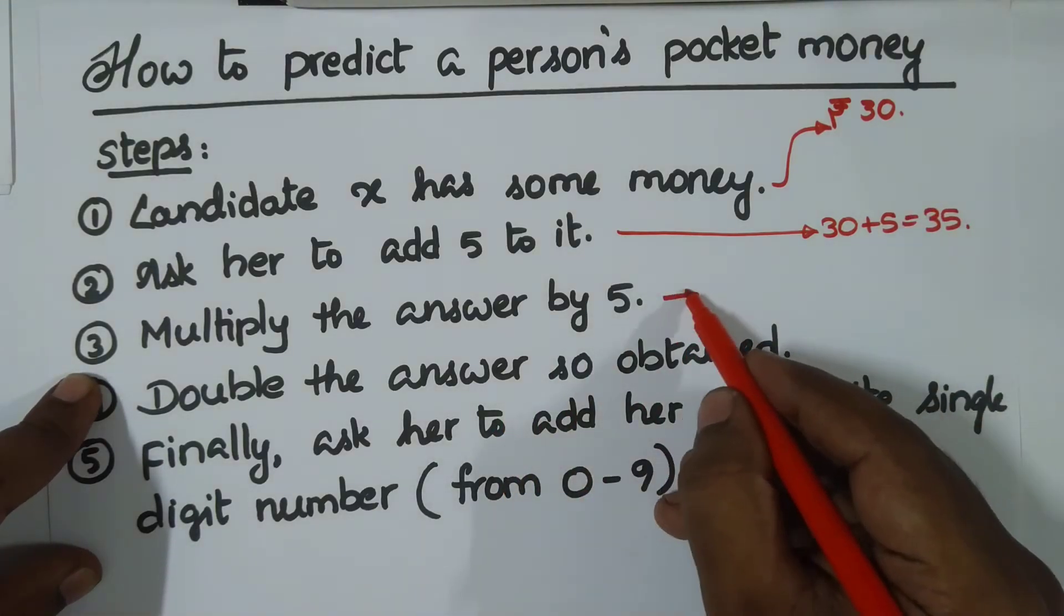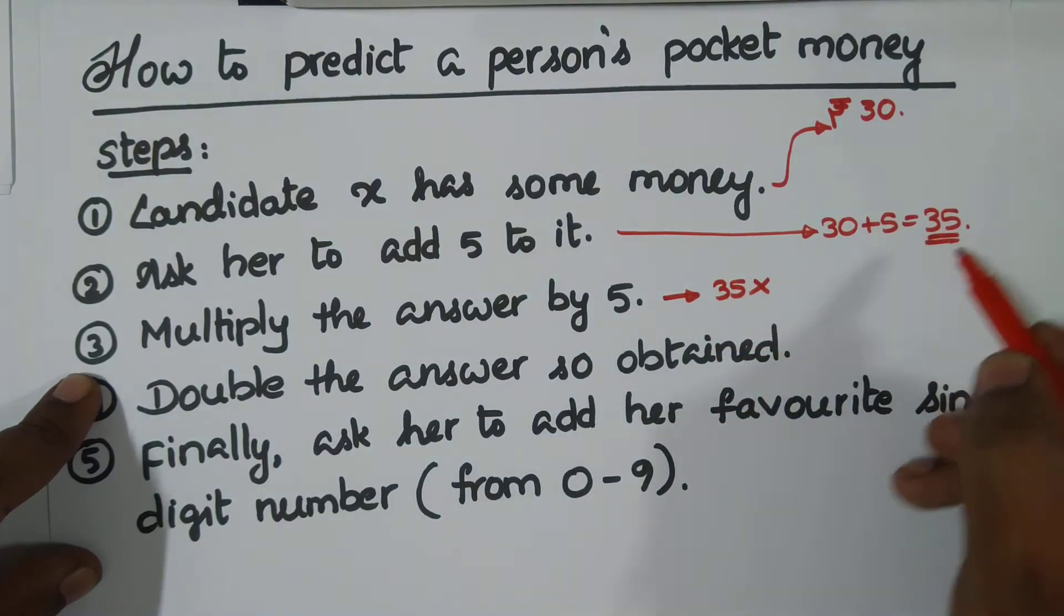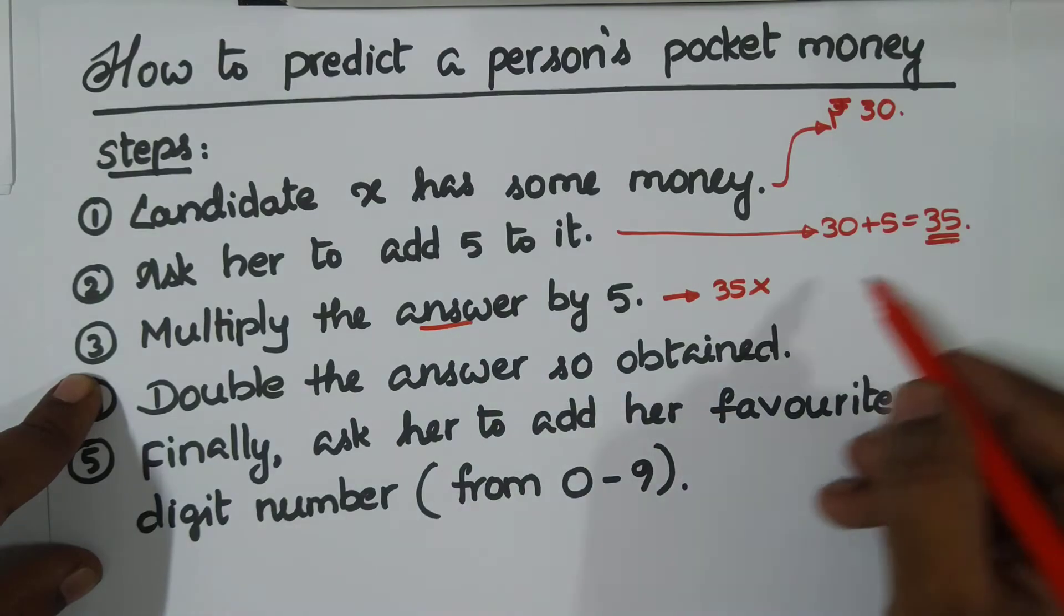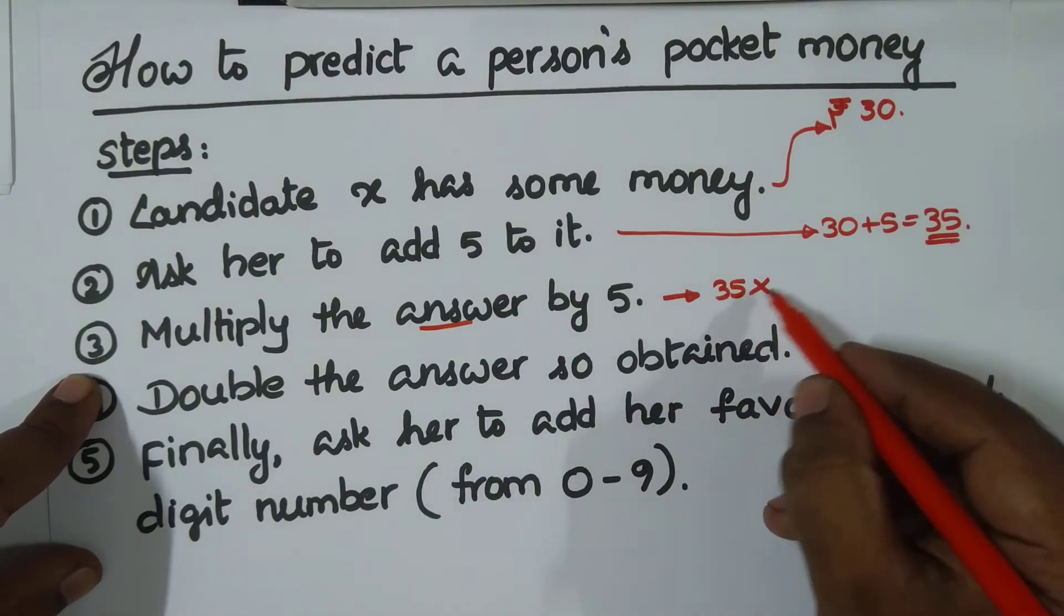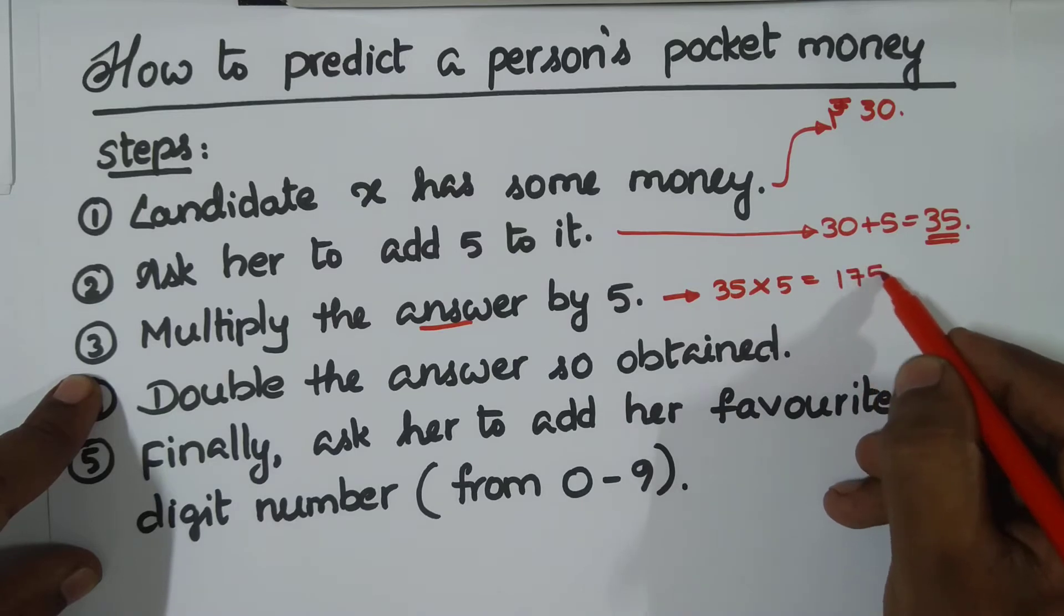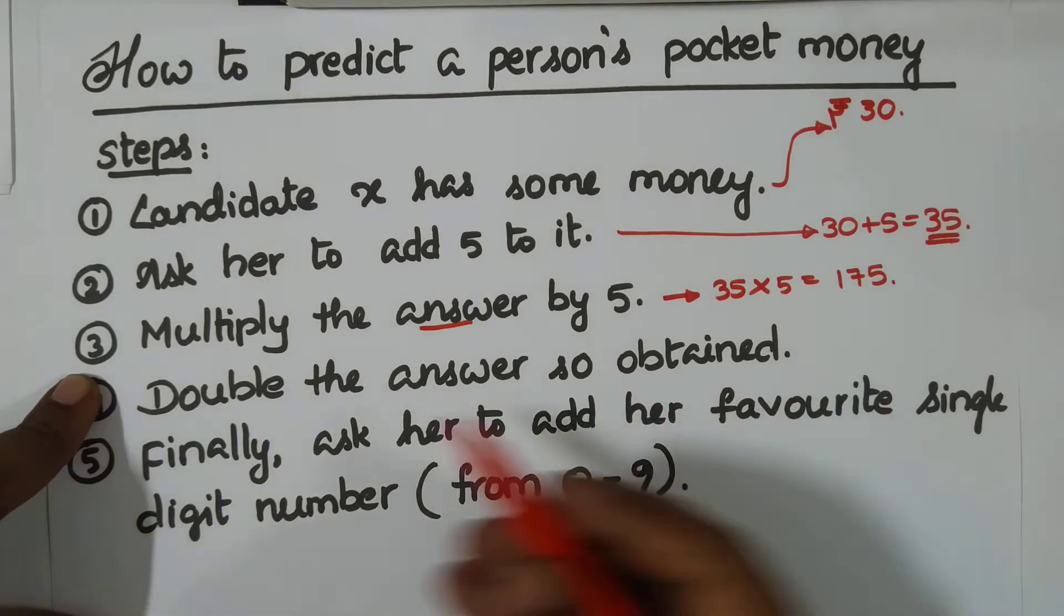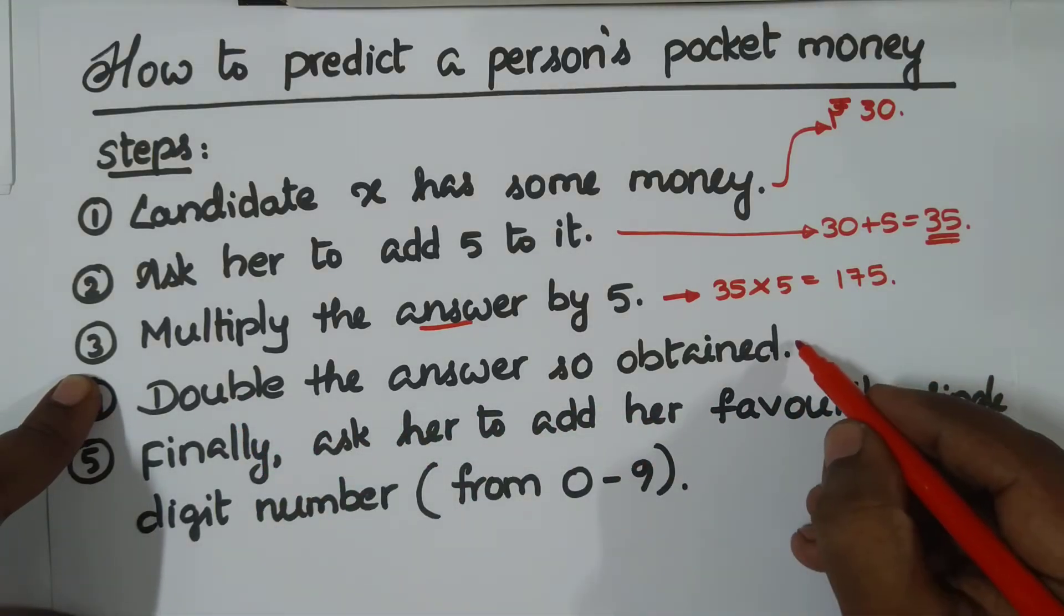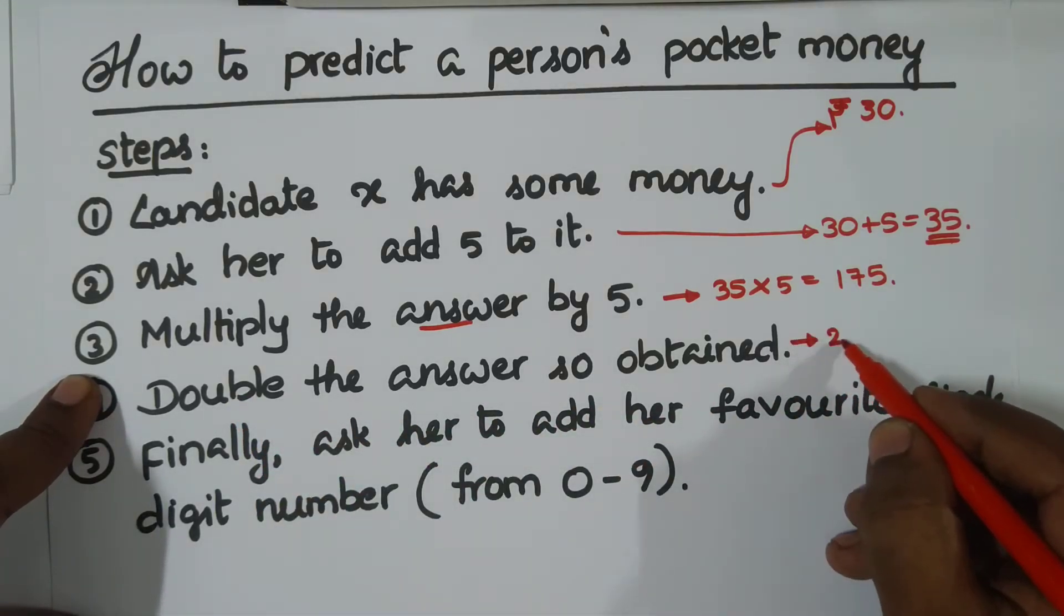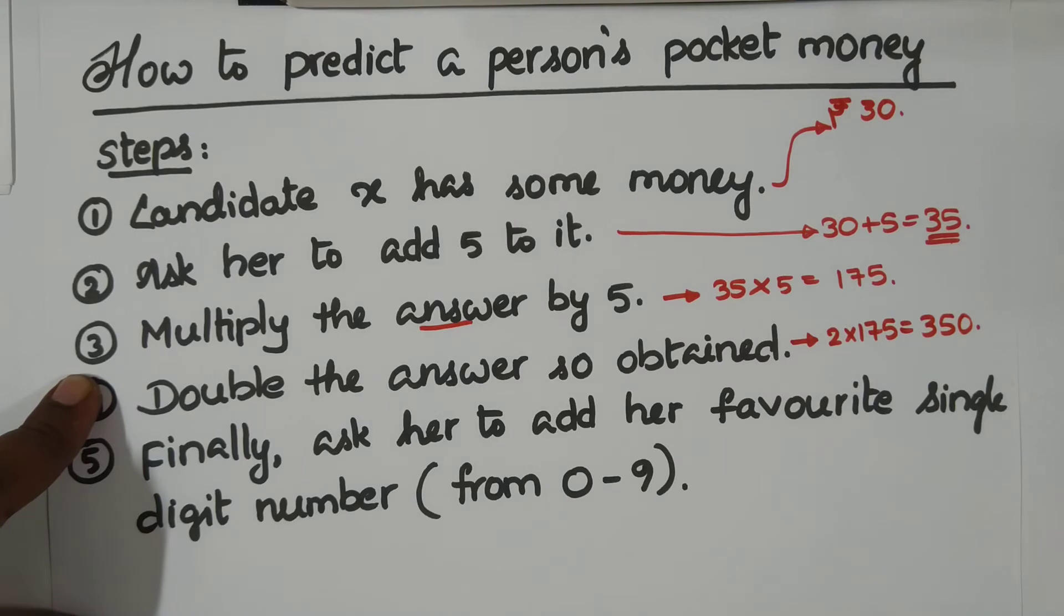Now multiply the answer by five. You multiply this 35, this answer. If you do so, you get 175. Now double the answer. In step number three, you have 175, just double it. Twice 175 is 350.